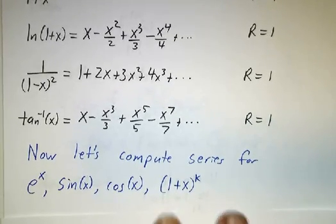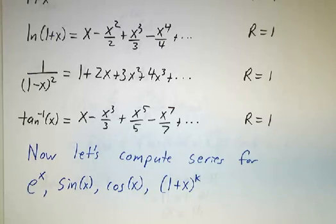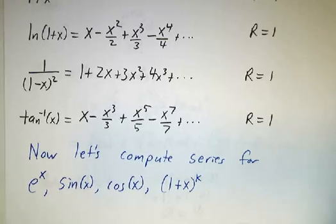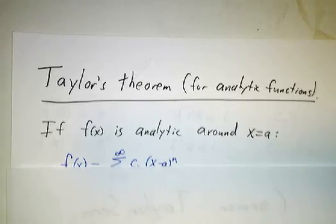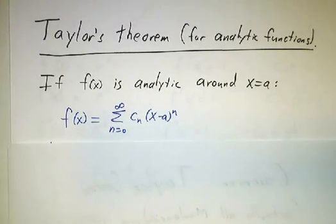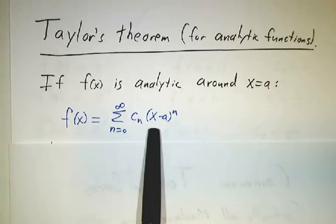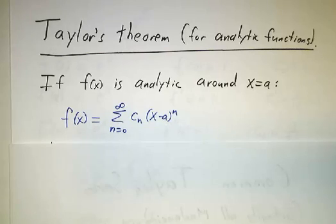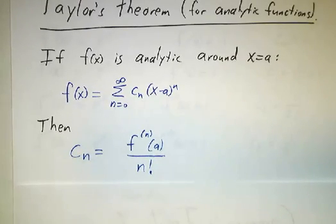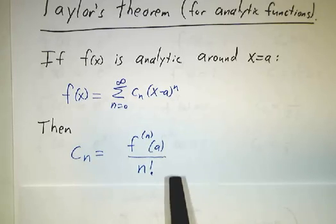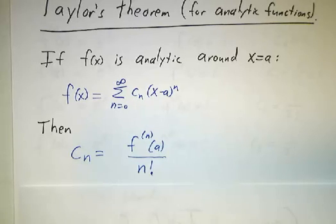The theorem from the last video gives us that systematic way. In this video, we're going to compute the Taylor series for functions that are not related to a geometric series. Remember what Taylor's theorem said: if you have an analytic function — that is, if there is a power series representation of your function f — then the coefficients are given by the nth derivative at a divided by n factorial. In all of the examples in this video, we're working around a equals 0, so we'll just have powers of x, not powers of x minus 3 or x minus 5.